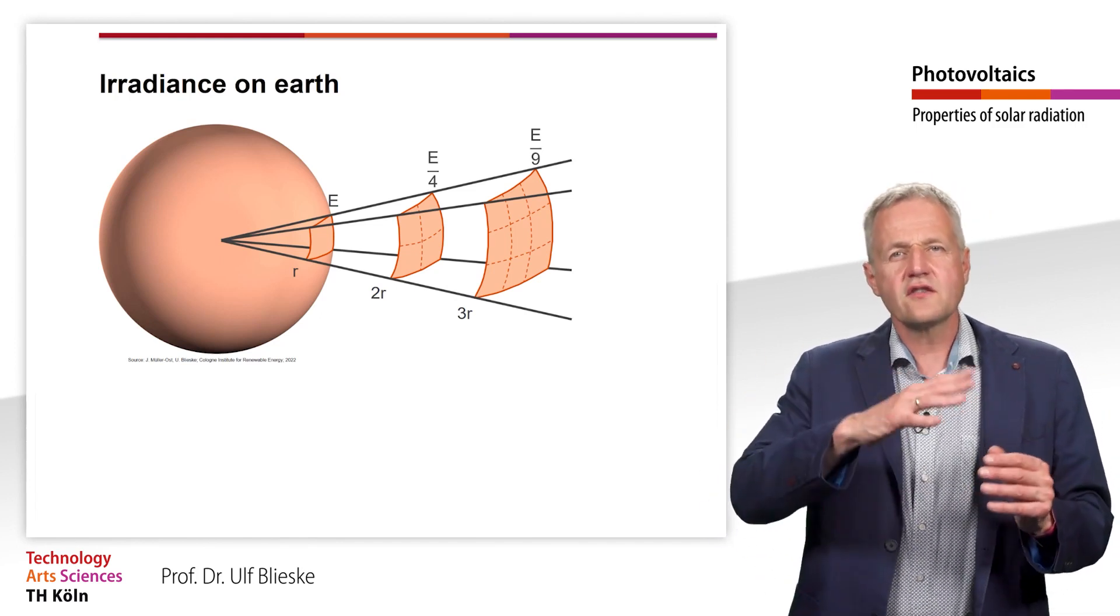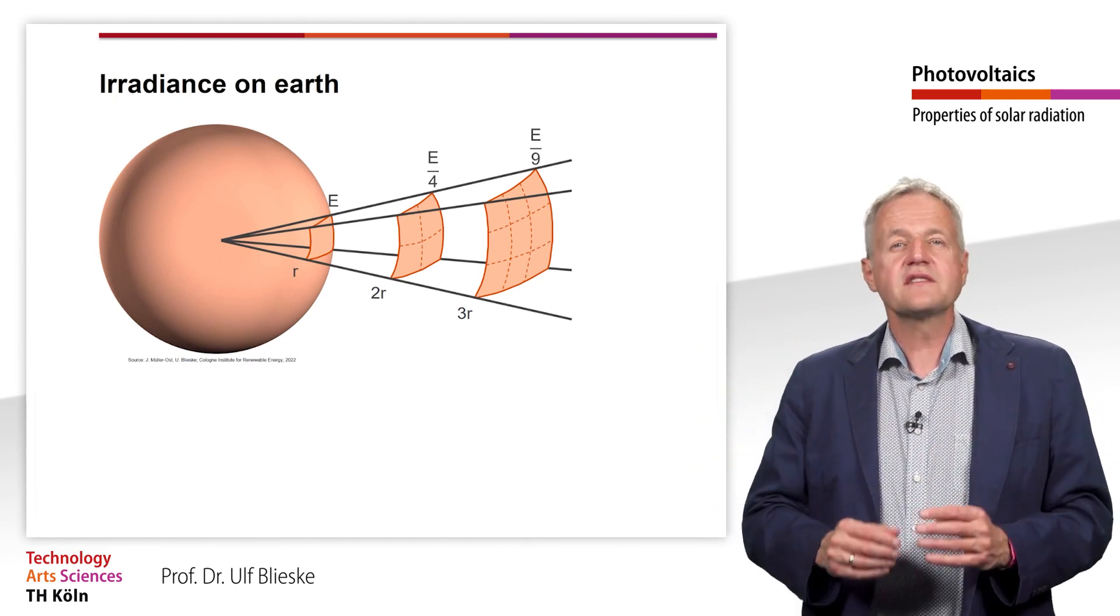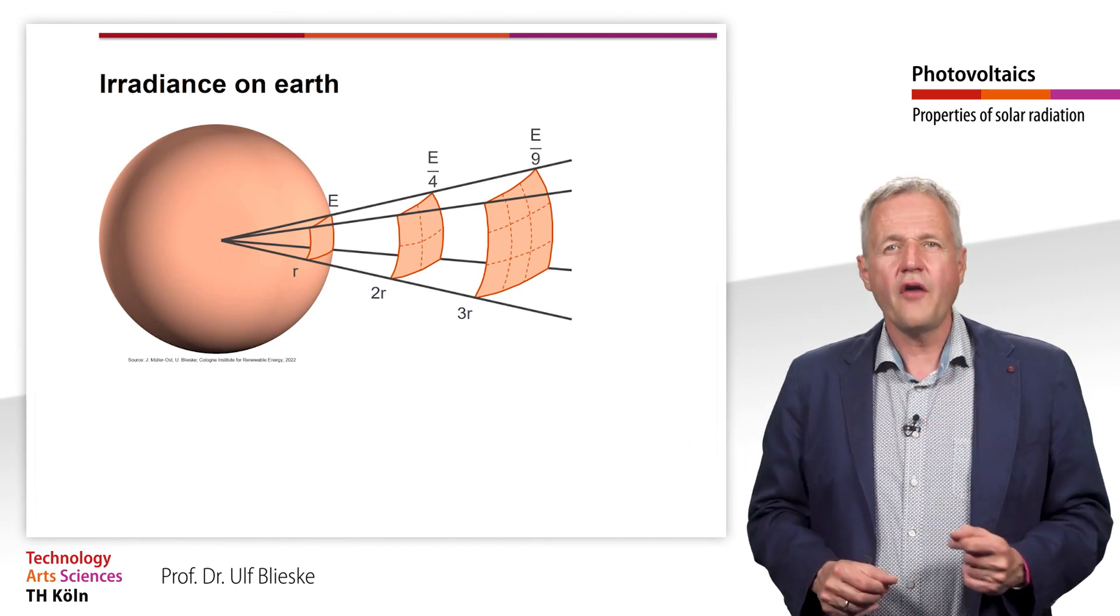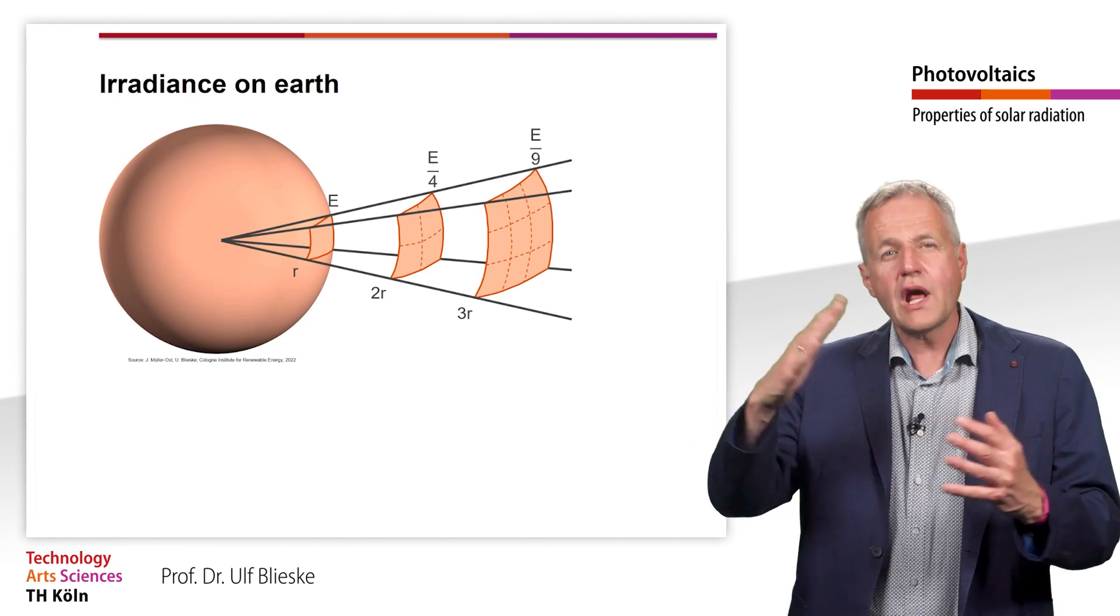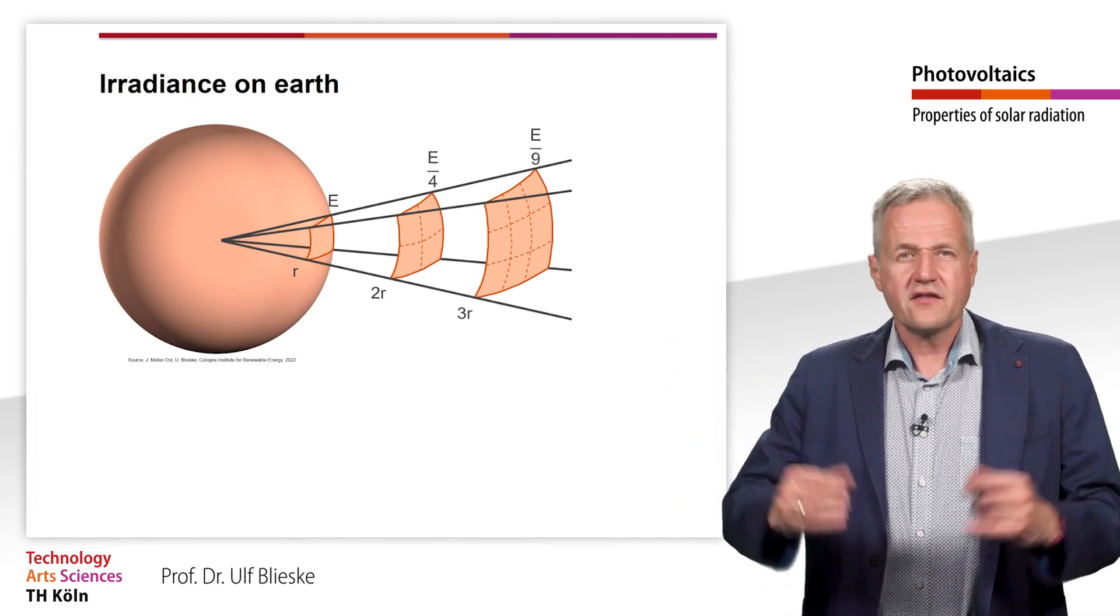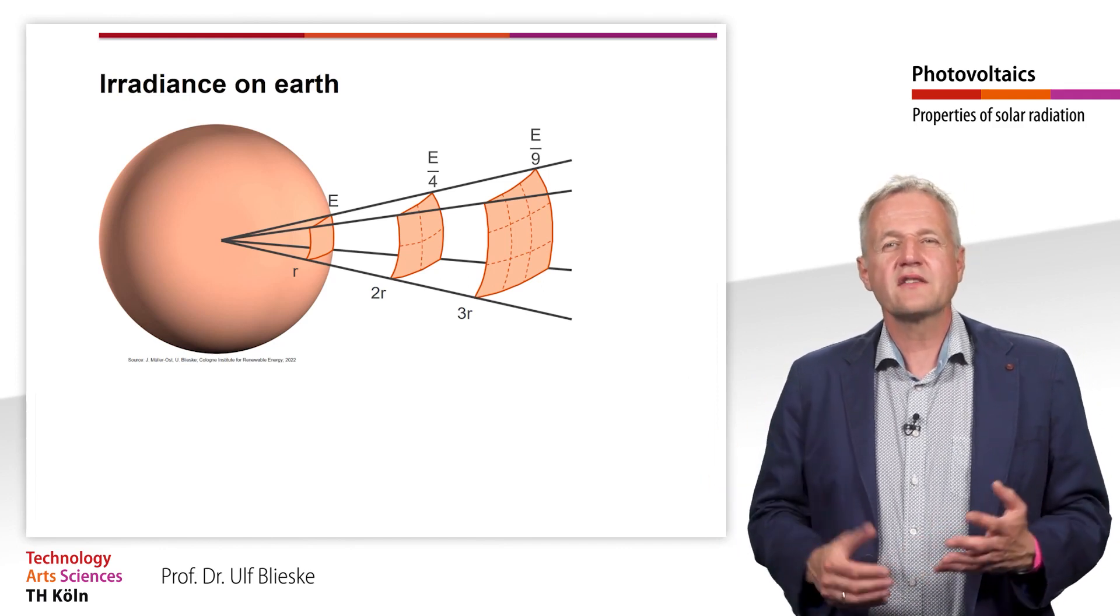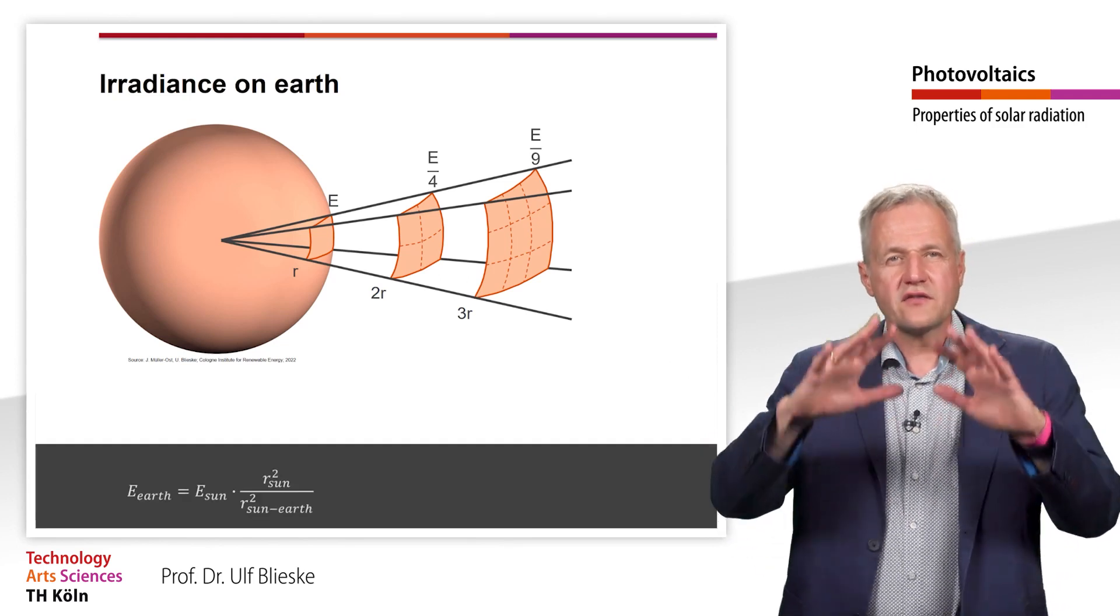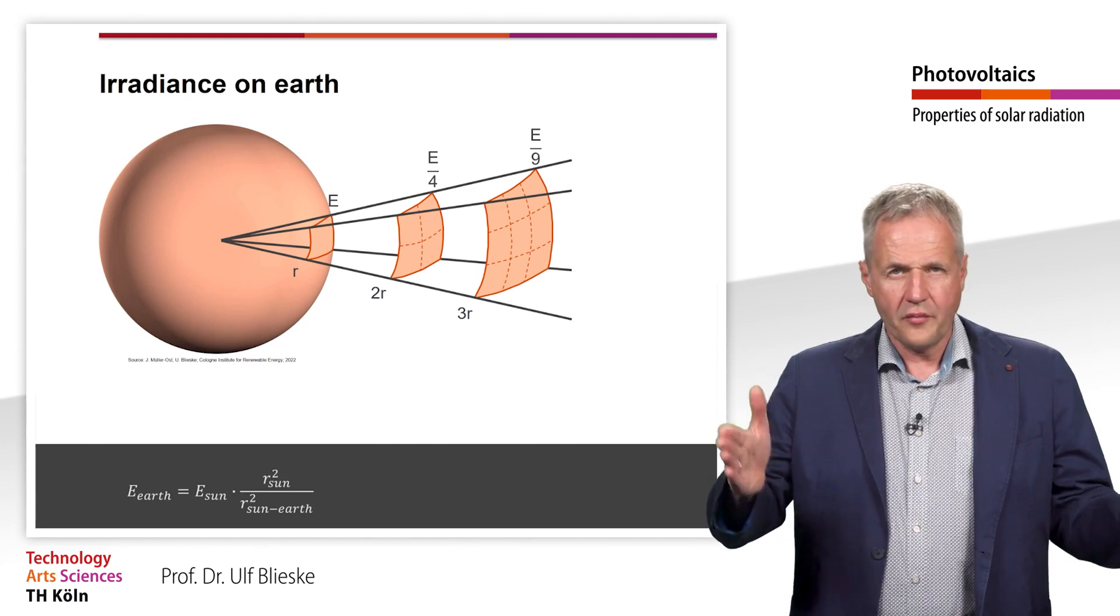Thus, at the distance of two solar radii from the center of the sun, the irradiance decreases to one quarter of the one of the solar surface. At the distance of three solar radii, we have only one-ninth of the irradiance and so on. So to calculate the irradiance arriving at the earth, we need the radius of the sun as well as the distance of the earth from the sun.